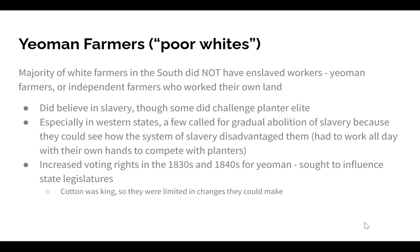Yeoman farmers — poor whites who did not own enslaved workers — were the majority of white farmers in the South. These were independent farmers working their own lands on more or less self-sustaining family farms. Though they didn't own slaves, most believed in slavery. A few called for gradual abolition, seeing how the system disadvantaged them — they had to work with their own hands to compete against planters using slave labor. As voting rights expanded in the 1830s and 1840s, they sought to influence state legislatures, but the planter aristocracy maintained strong control.